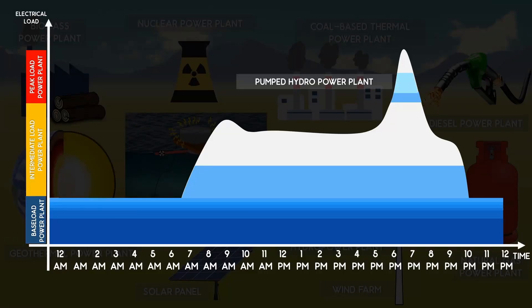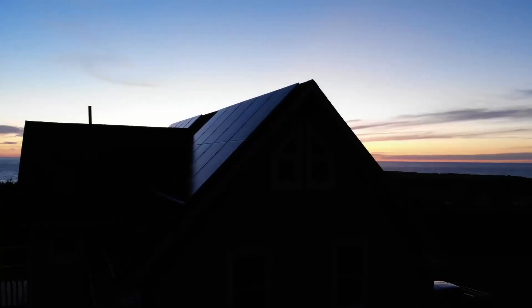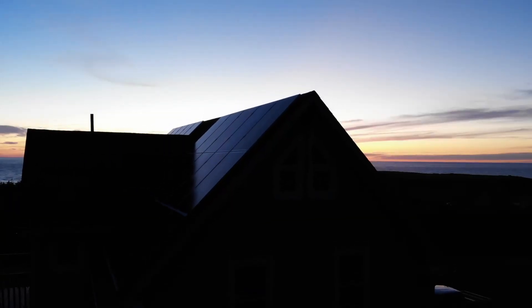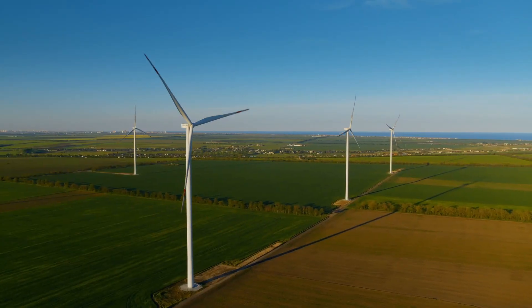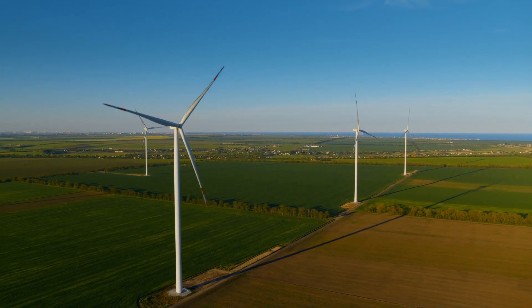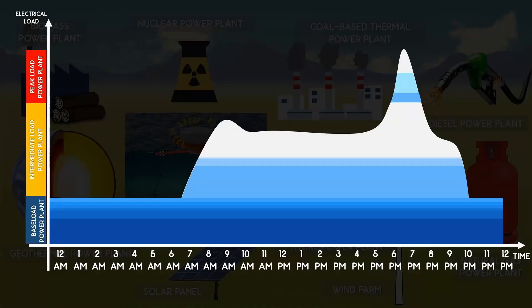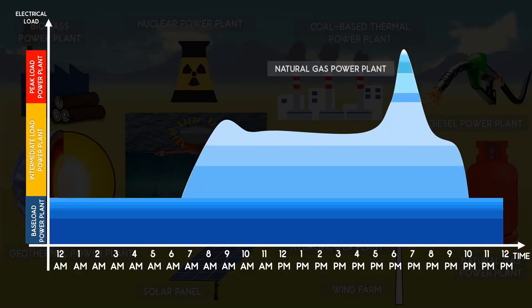Solar panels cannot generate electricity at night time and wind turbines cannot generate electricity when there is no wind. That's why they cannot generate continuous power throughout the day. So they are used as intermediate plants. As I said earlier, the diesel and natural gas power plants have high operating cost. So they are used only as the peak load plants.